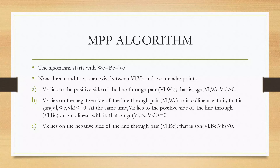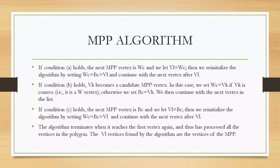Coming to condition B: if VK lies on the negative side of the line through VL, WC or is collinear with it — that is, signum of VL, WC, VK is less than or equal to 0 — and at the same time VK lies to the positive side of the line through WL, BC or is collinear with it — that is, signum of WL, BC, VK is greater than or equal to 0. Condition C: VK lies on the negative side of the line through the pair WL, BC — that is, signum of WL, BC, VK is less than 0. If condition A holds, the next MPP vertex is WC and we let VL equal to WC, then reinitialize the algorithm by setting WC equal to BC equal to VL and continue with the next vertex after VL.